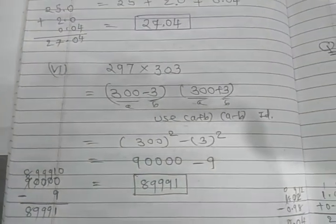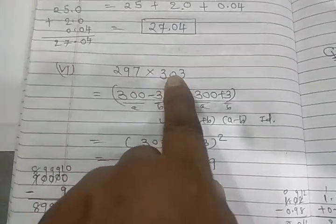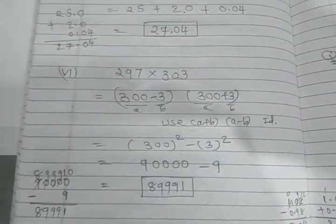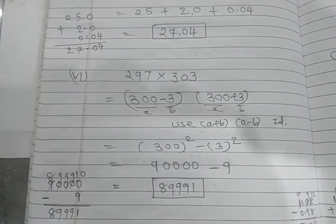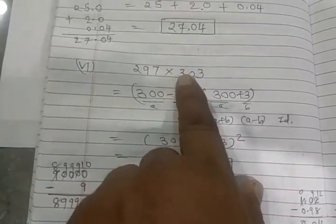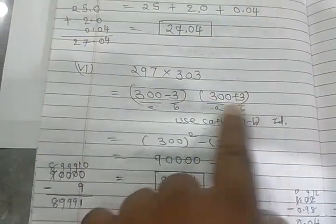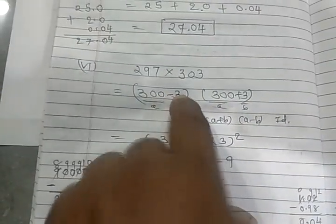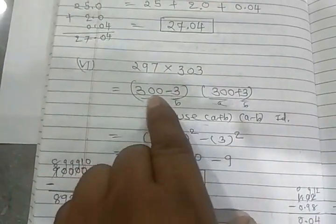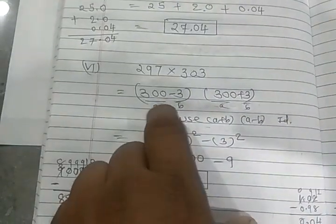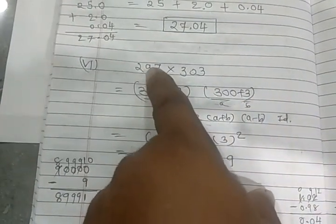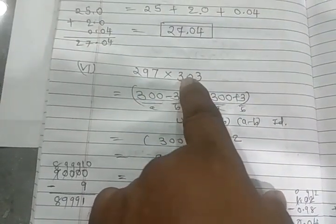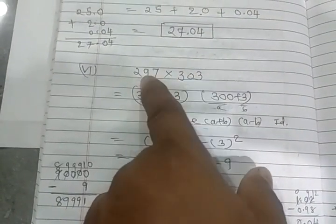Similarly, now dhekho, ye two ninety-seven multiply by three zero three. Toh aapko yaha partition karna hai two ninety-seven, three three three. Mein aap kya kar sakte ho? Toh ye aap dhekho, three hundred plus three se ye hota hai aur ye three hundred minus three toh two ninety-seven hota hai. Yani yaha aapne kaunsa identity use karna hai? a minus b, a plus b.